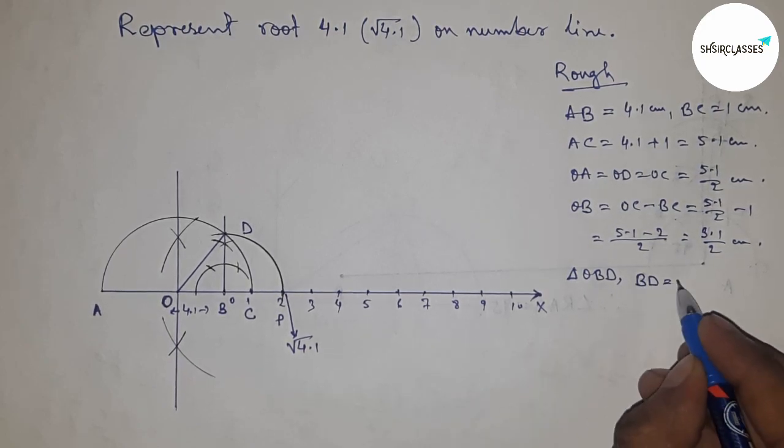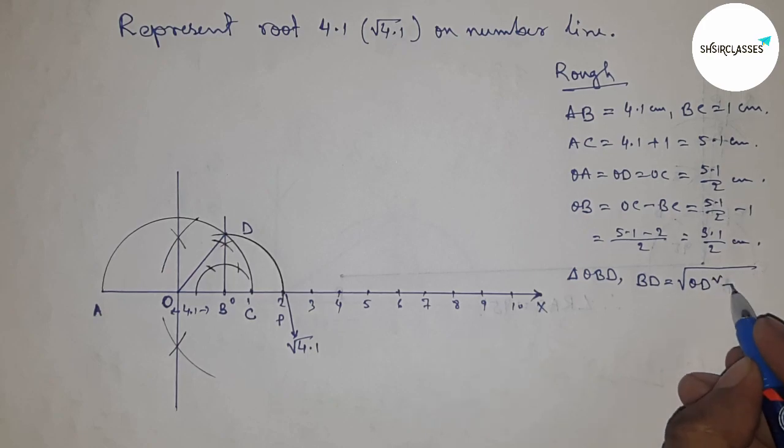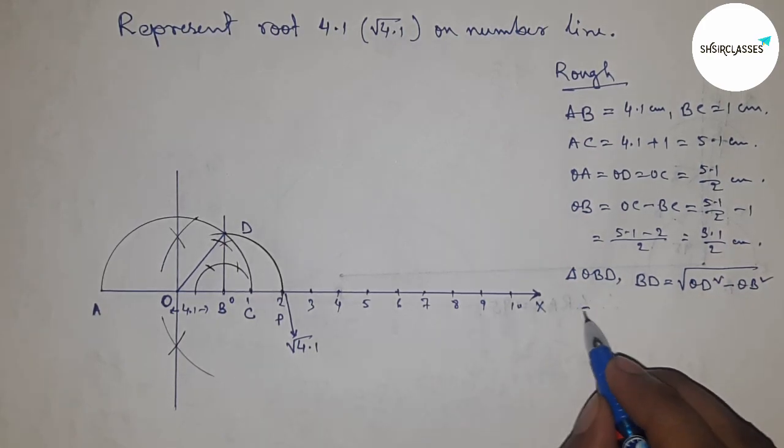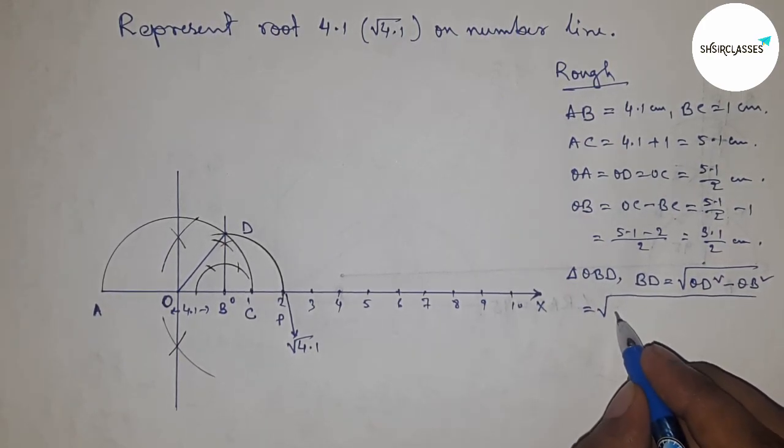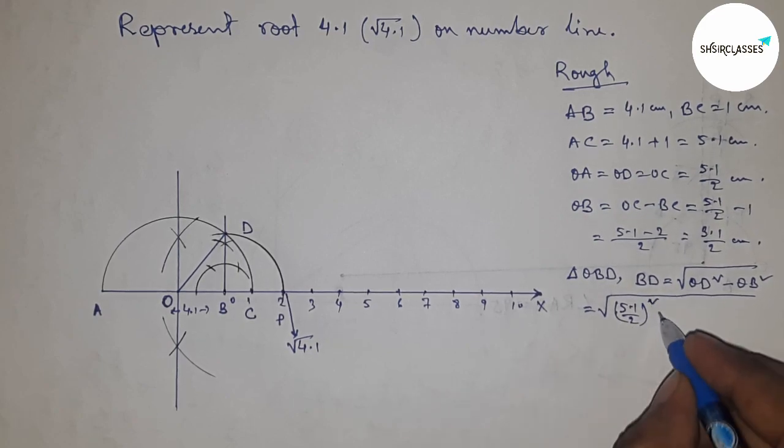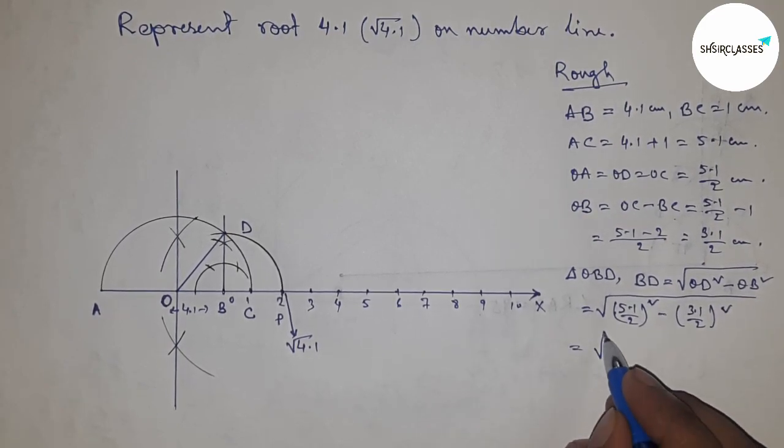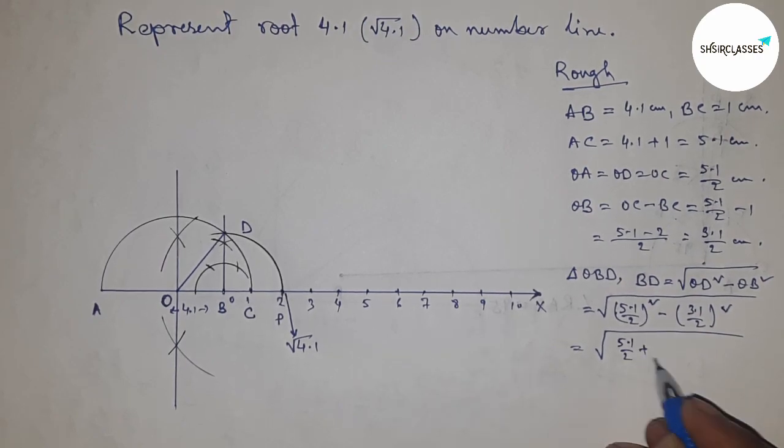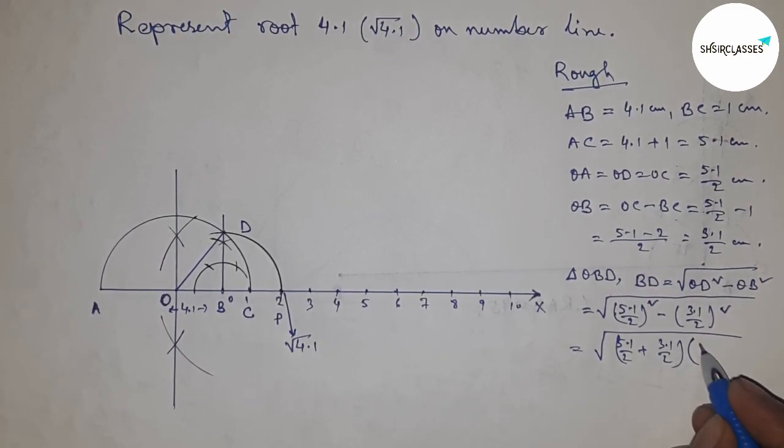In right triangle OBD, by Pythagorean theorem: BD = √(OD² - OB²). Putting the values of OD and OB, then applying the formula a² - b² = (a+b)(a-b).